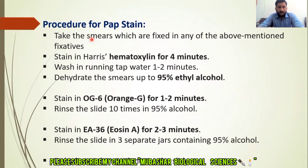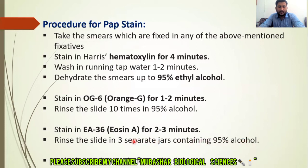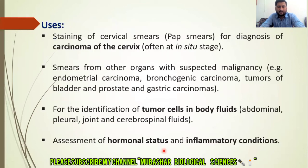After Orange G staining, we rinse the smear by dipping it ten times in 95% alcohol. The third stain used is EA-36 (Eosin A). The smear is dipped in Eosin A stain for two to three minutes, and then the slide is rinsed in three separate jars containing 95% alcohol. So the first stain is Hematoxylin, the second stain is Orange G, and the third stain is Eosin A. After rinsing in three separate alcohol jars, we dehydrate, then clear and mount the slide for observation.